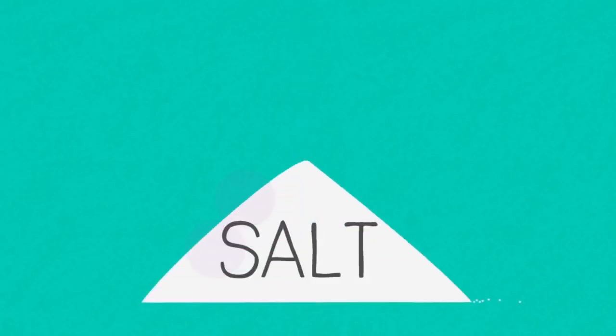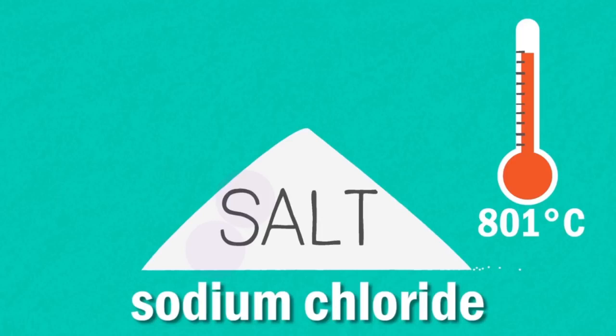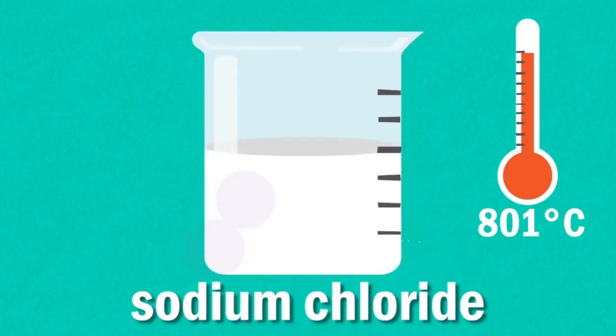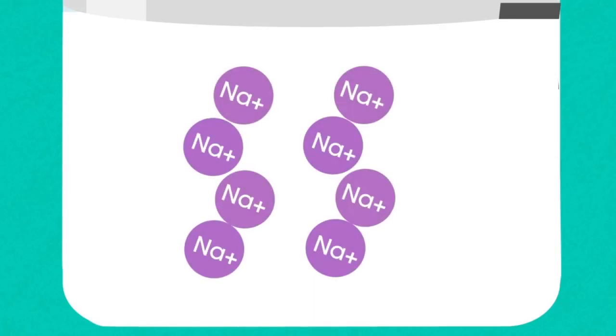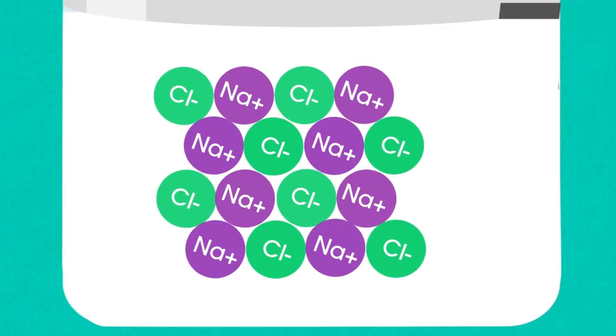Let's take a common example, table salt. If you heat sodium chloride to over 801 degrees Celsius, it will melt. The liquid will contain free flowing positive sodium ions and negative chloride ions. This simply means that sodium and chloride ions are free to move within the liquid sodium chloride.